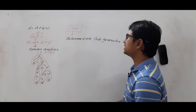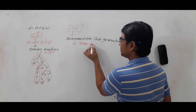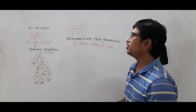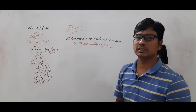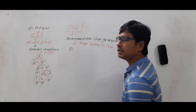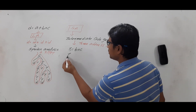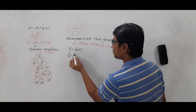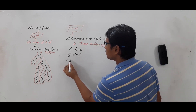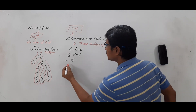The intermediate code generator generates three-address code. For the expression D = A + B * C, multiplication has the highest priority, so first we compute t1 = B * C, where t1 is a temporary variable. Then we compute t2 = A + t1. Finally we write D = t2. This is the three-address code generated by the intermediate code generator.